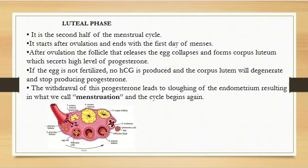That leads us to the next phase, which is the luteal phase — the second phase of the menstrual cycle. This phase starts after the release of the egg, that is after ovulation, and it ends on the first day of your menses, which is when you see your blood.